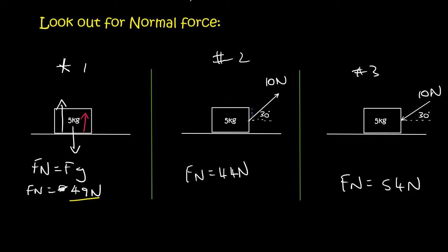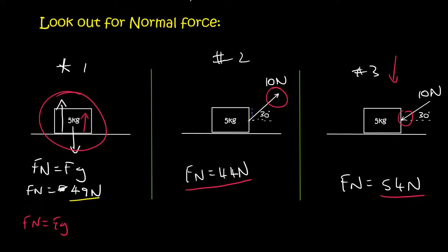Here's the summary. When an object is just resting, normal force equals gravity. When a force is applied at an upward angle, it helps the normal force a little — so the normal force is only 44. When the applied force is in a downward direction, it pushes the object into the ground and the normal force has to work harder, giving 54. In summary: normal force equals gravity, or gravity minus Fy, or gravity plus Fy.